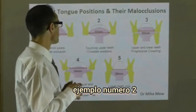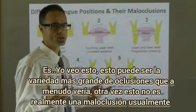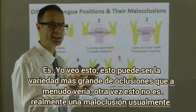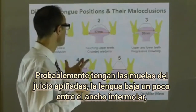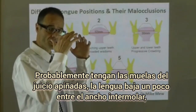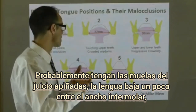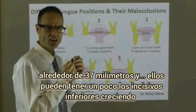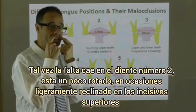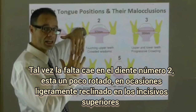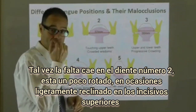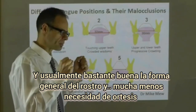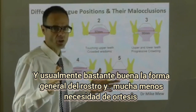Example number two is the wider variety of occlusions that I would often see. It's not really a malocclusion usually. They've probably got crowded wisdom teeth. The tongue is down a little bit, inter-molar width around 37mm. There can be a little bit of lower incisor crowding, maybe the laterals — tooth number two — is a little bit rotated, sometimes slightly retroclined upper incisors. Usually a pretty good general facial shape, and very low need for orthodontics.